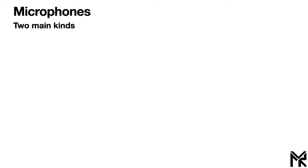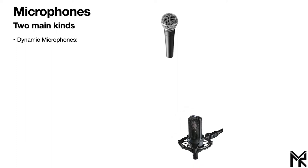There are two main types of microphones: dynamic microphones and condenser microphones. Let's talk about the differences between these two and give a quick overview of how they work.